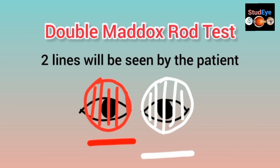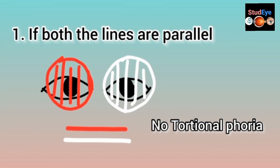Incyclo and excyclo refer to the direction of 12 o'clock corneal rotation. When the 12 o'clock position of the cornea is rotated inward, toward the nose, the patient has incyclophoria. When the 12 o'clock cornea is rotated outward, it is excyclophoria.